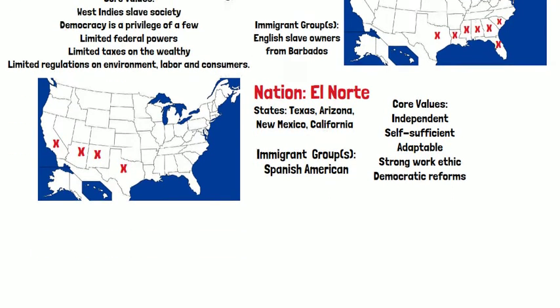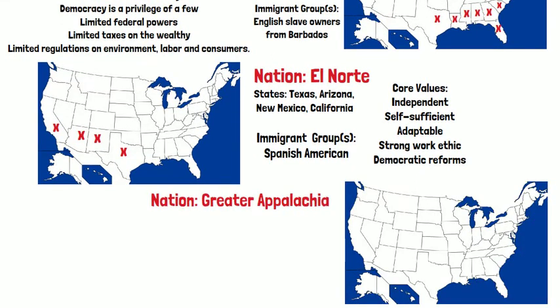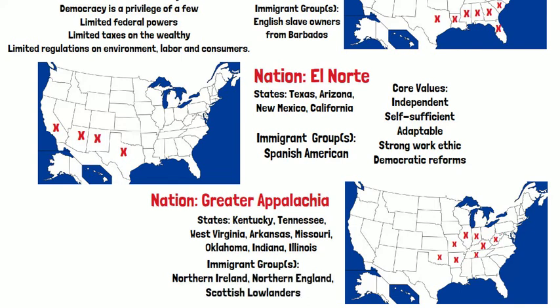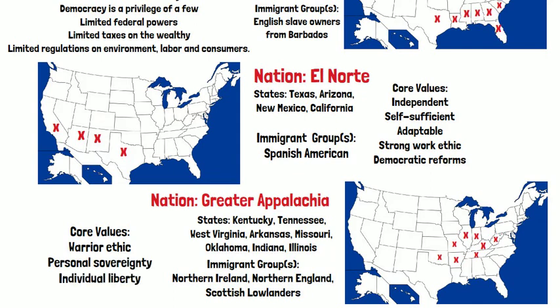The next nation is Greater Appalachia. This was settled by immigrant groups from Northern Ireland, Northern England, and the Scottish lowlands. The states involved include Kentucky, Tennessee, West Virginia, Arkansas, Missouri, Oklahoma, Indiana, and Illinois. The core values here are associated with a warrior ethic, personal sovereignty, and individual liberty.